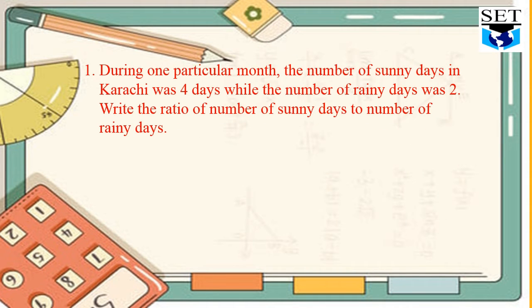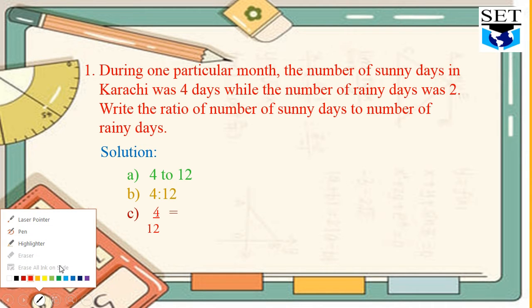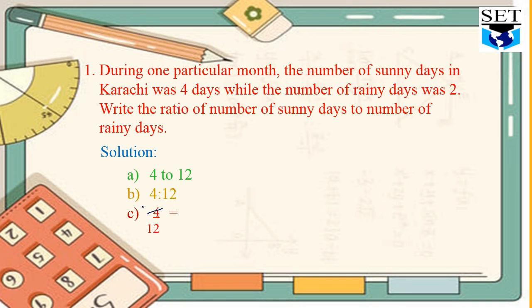Now we are going to look at some questions. During one particular month, the number of sunny days in Karachi was 4 days while the number of rainy days was 2. Write the ratio of number of sunny days to number of rainy days. Solution: we can write this ratio as 4 to 12, 4:12, or 4/12. After that, we will reduce it. After reducing, 4 times 1 is 4 and 4 times 3 is 12, we will get 1/3.